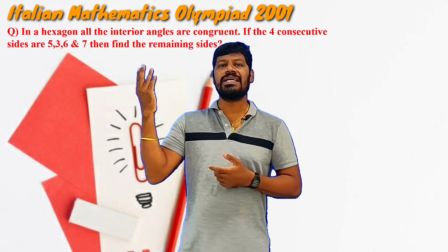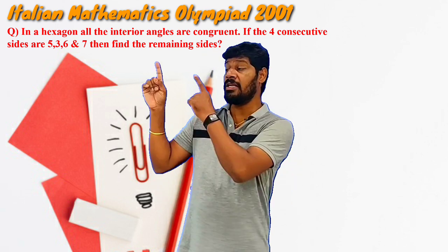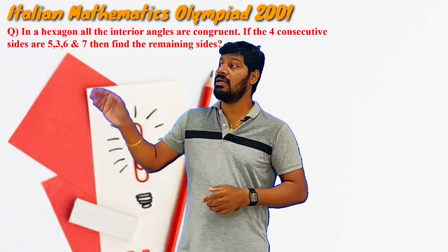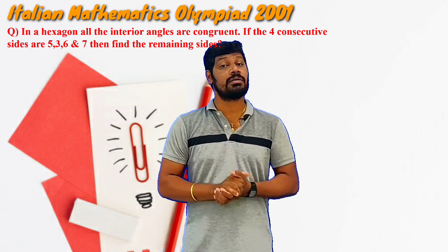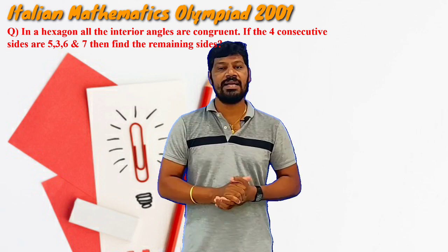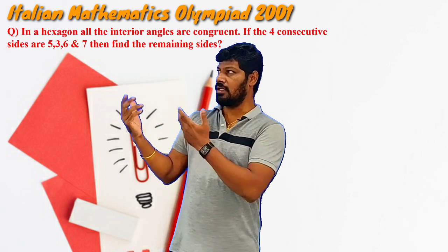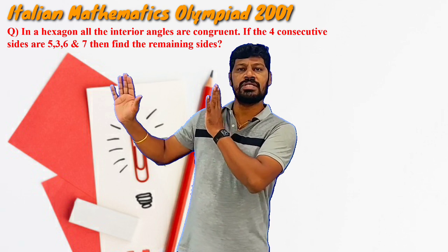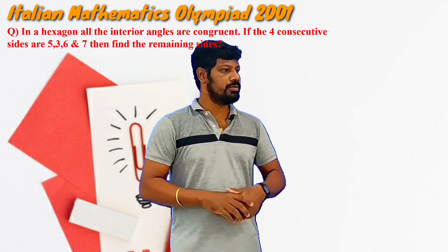Now without wasting time, let me recall the question. A hexagon whose all interior angles are congruent to each other — they did not mention it is a regular hexagon — just a hexagon whose all interior angles are congruent to each other, has 4 sides: 5, 3, 6, 7. What are the remaining 2 sides? So it looks innocent but actually it is not.